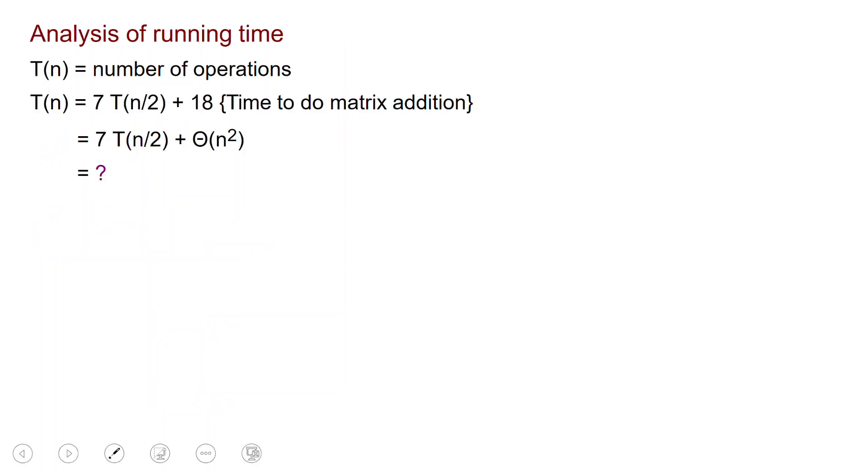The running time that you get has the following recursion. So to multiply two n by n matrices, it's enough to perform seven multiplications of n over 2 by n over 2 matrices, plus some constant number of matrix additions. So the recursion is of the type 7 times T(n/2) plus theta of n squared, because the time for addition is n squared. And for this you can do a recursive tree, just like you've seen for Karatsuba, and you will get the time which is theta of n to the log base 2 of 7, which is order of n to the 2.81.